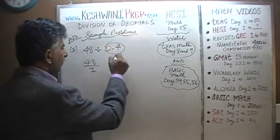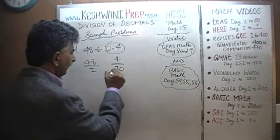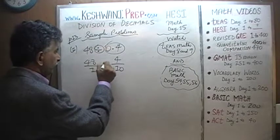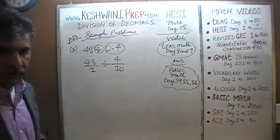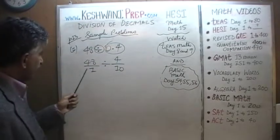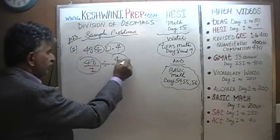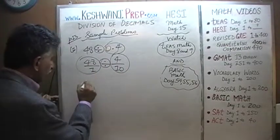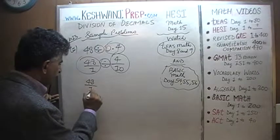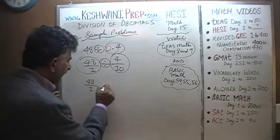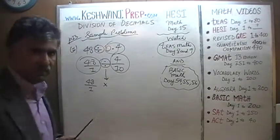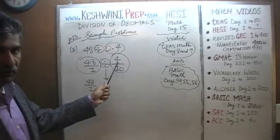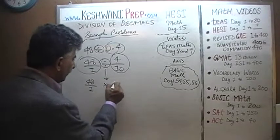0.4 can be written as 4 over 10, because that is what 0.4 is. We have a division sign in between. When we have one fraction divided by another fraction, we take the first fraction — 48 over 1 — and multiply it by the reciprocal of the second fraction. The reciprocal of 4 over 10 is 10 over 4.